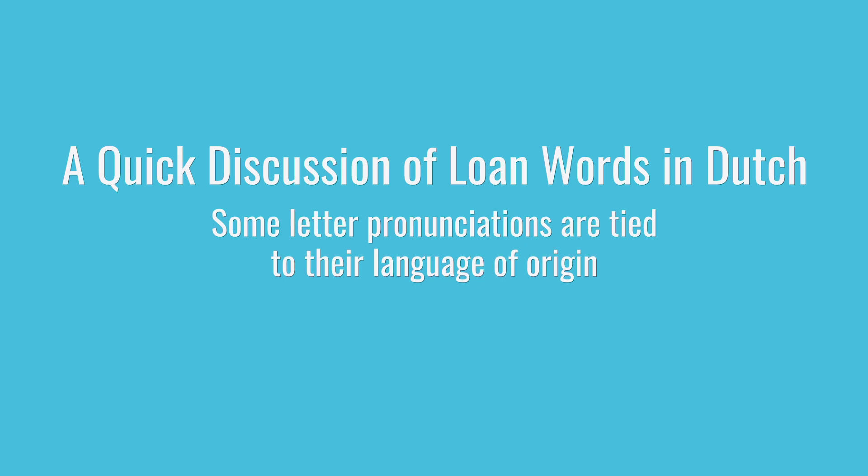The other spot in Dutch where you'll hear a schwa is when you run into an unstressed ij, usually at the end of a word, giving you words like heerlijk.